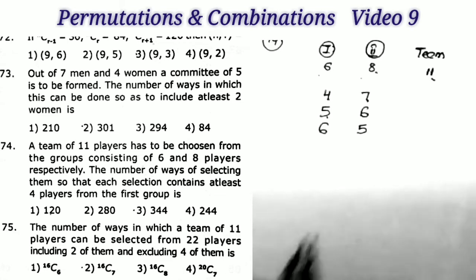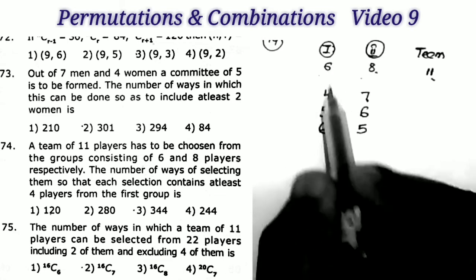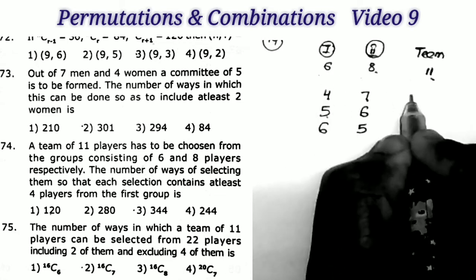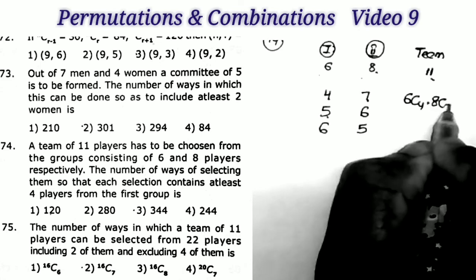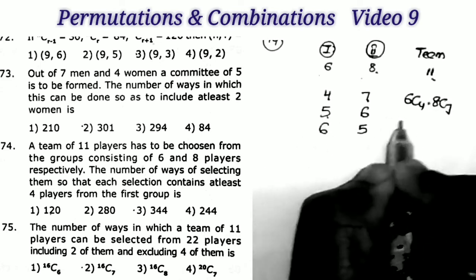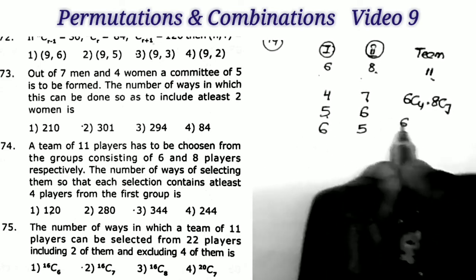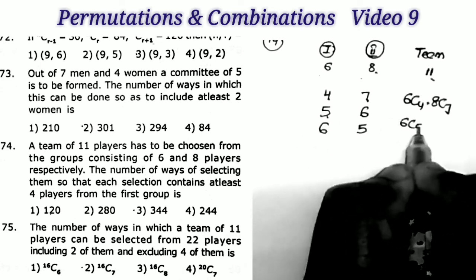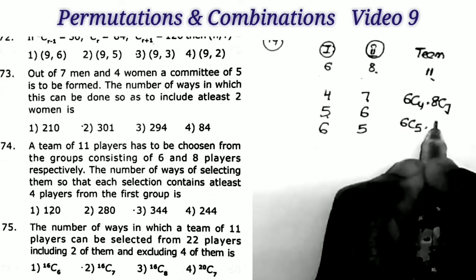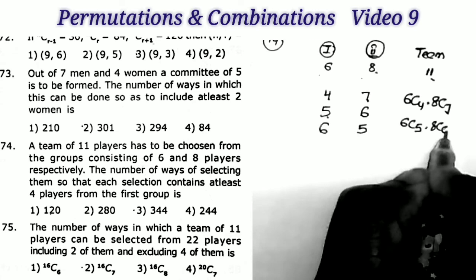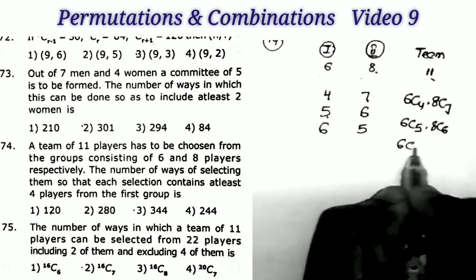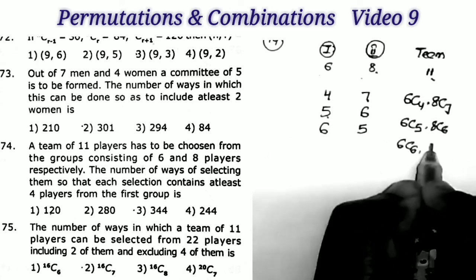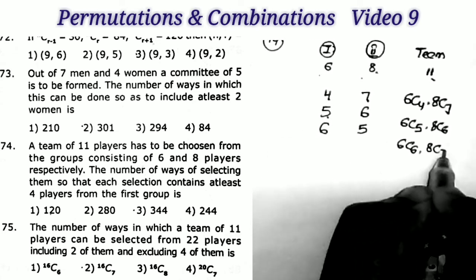The combinations are: 6C4×8C7 (first case), 6C5×8C6 (second case), and 6C6×8C5 (third case).